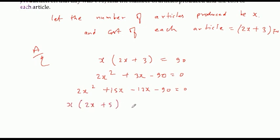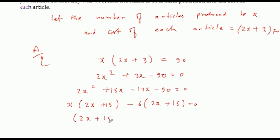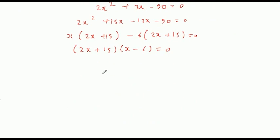और यहां पर common करेंगे minus 6, तो यहां आएगा 2x plus 15। दोनों brackets में से common कर लेते हैं 2x plus 15, यहां x और यहां minus 6, equal to 0। तो यहां पर लिखेंगे: 2x + 15 = 0 और x - 6 = 0।